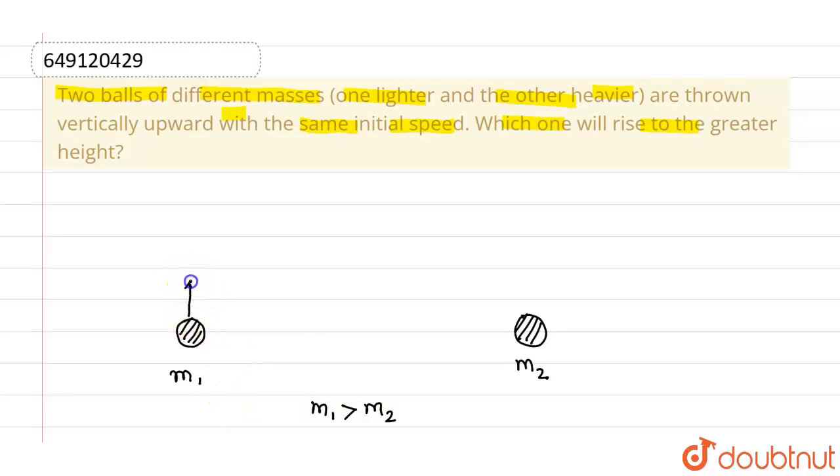And we have thrown both of these balls with the velocity u in the upward direction. We have to find out the height raised by these particular balls. So as we know that when they attain the maximum height, their velocity will be zero.